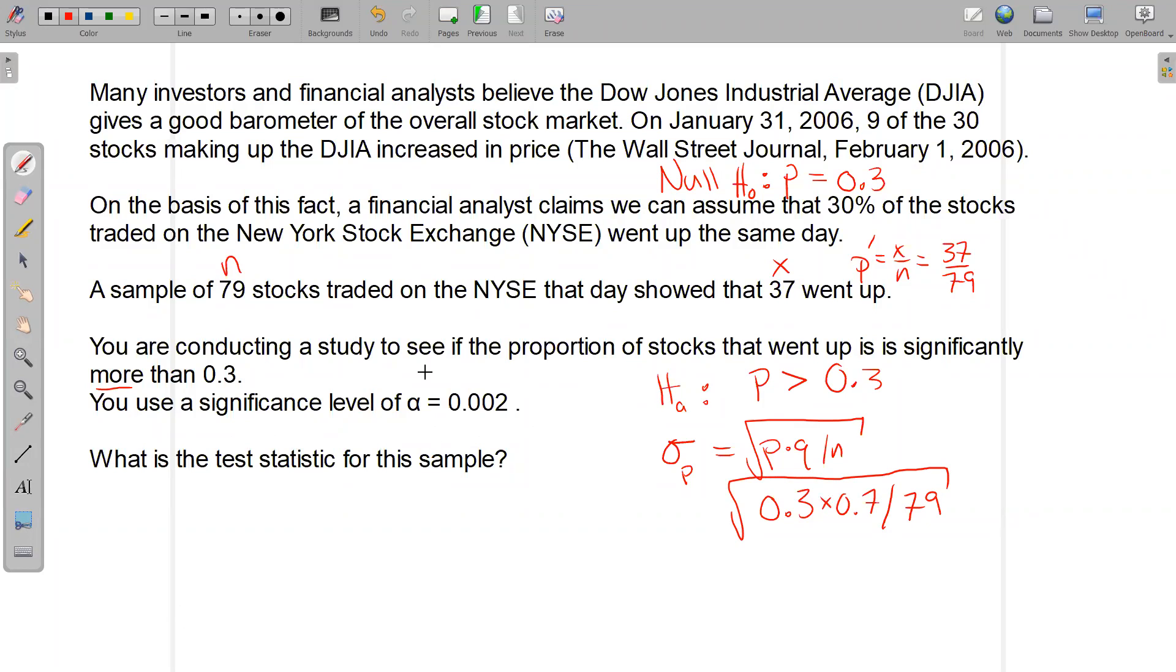So test statistic. A sample statistic is like the P prime or the X bar. A test statistic is either a Z score for us or a T score. In this case, since I have a proportion, I have to use Z scores. A Z score is always the number from the sample minus the number from the population, so P prime minus P divided by the standard deviation, which is the square root of P Q over N.